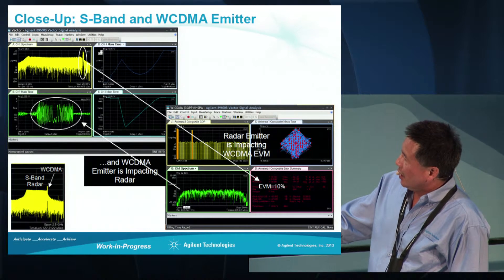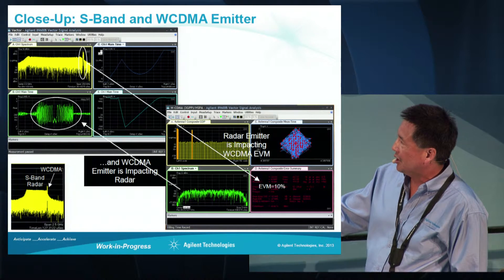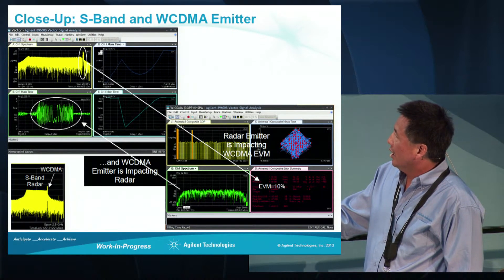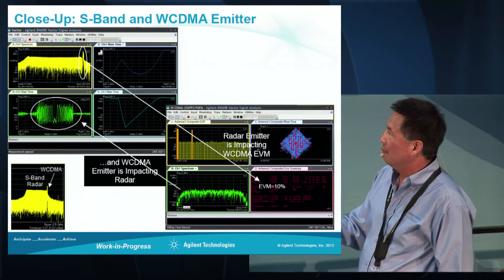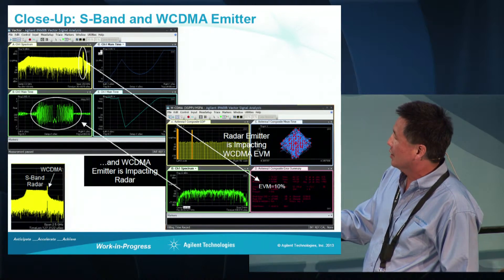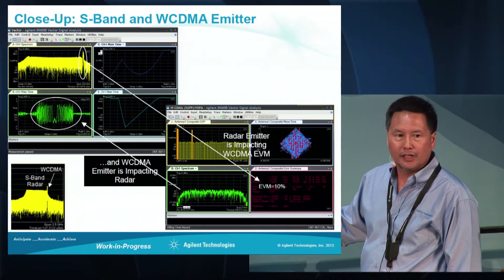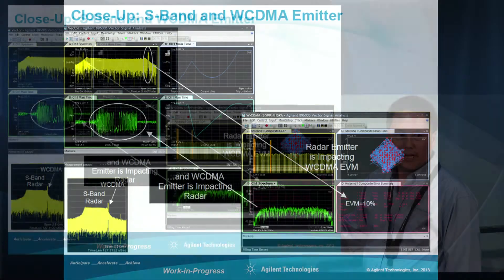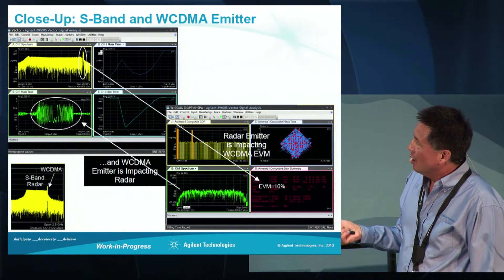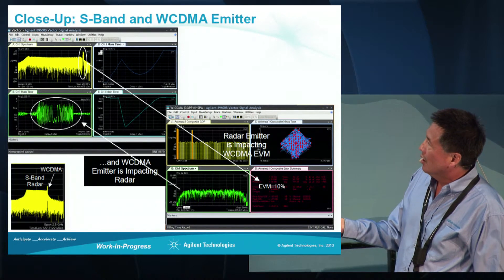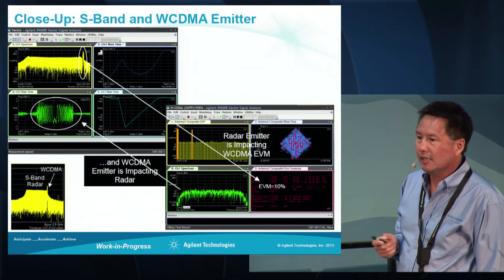This slide highlights the coexistence issues between radar and comm signals. This shows the S-band radar signal that had the WCDMA signal parked in its bandwidth, and here we're demodulating that WCDMA signal. Unlike the WCDMA signal shown previously with very low EVM, we can see that the radar signal is clearly degrading this WCDMA signal — visible in the dispersion of the constellation and in the EVM, which has risen to about 10%, significantly higher than before. Additionally, the WCDMA signal is also interfering with the radar signal in terms of chirp phase and chirp frequency characteristics.